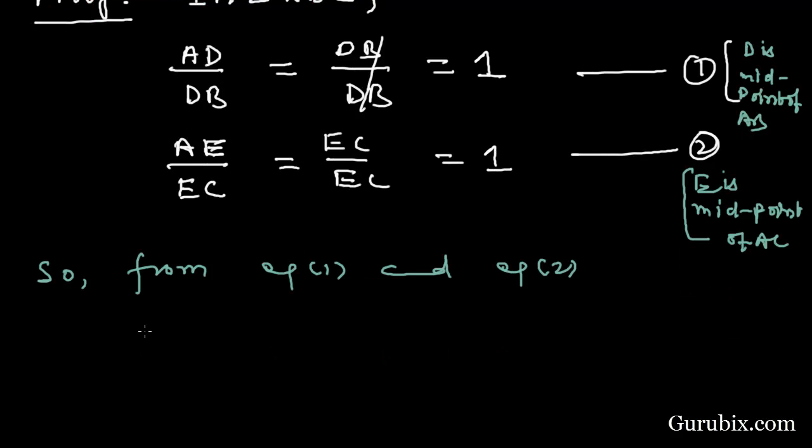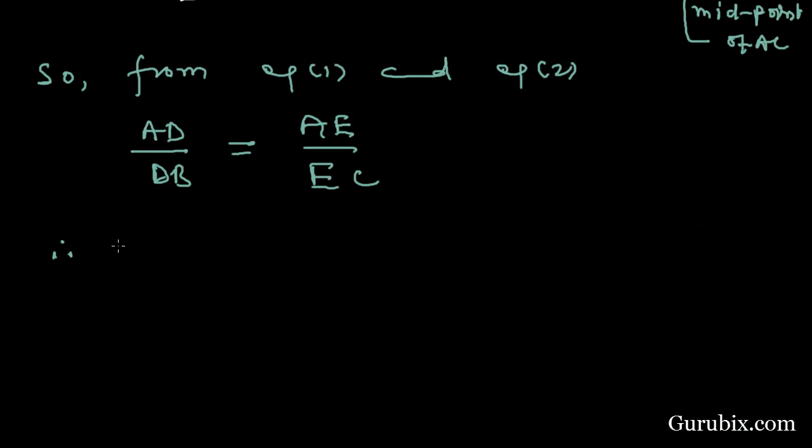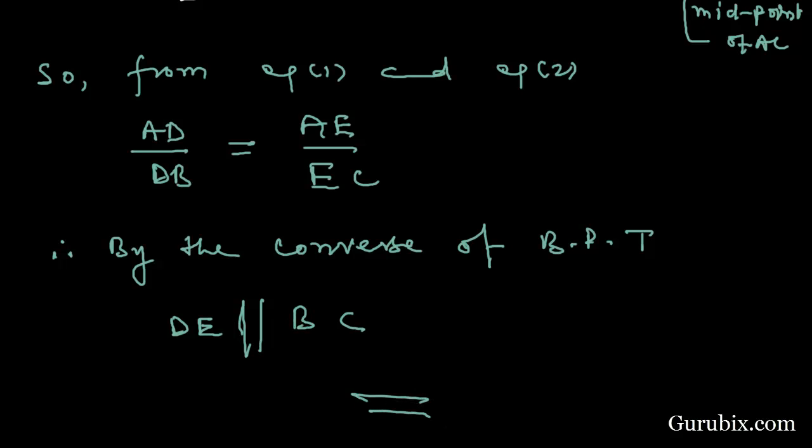We have AD over DB equals to AE over EC. Therefore, by the converse of BPT, DE is parallel to BC. So this is the solution of the question. Thank you.